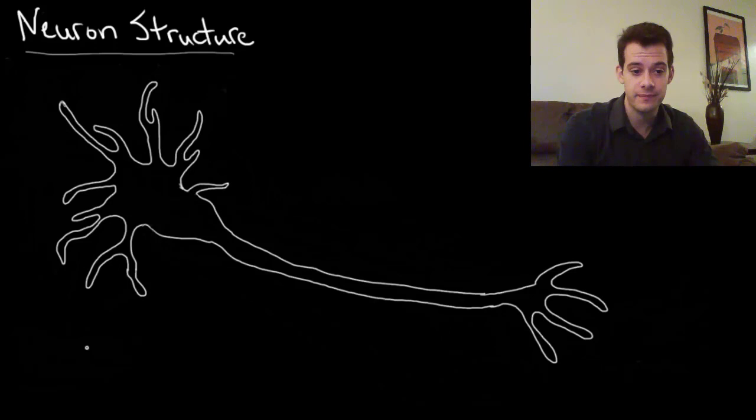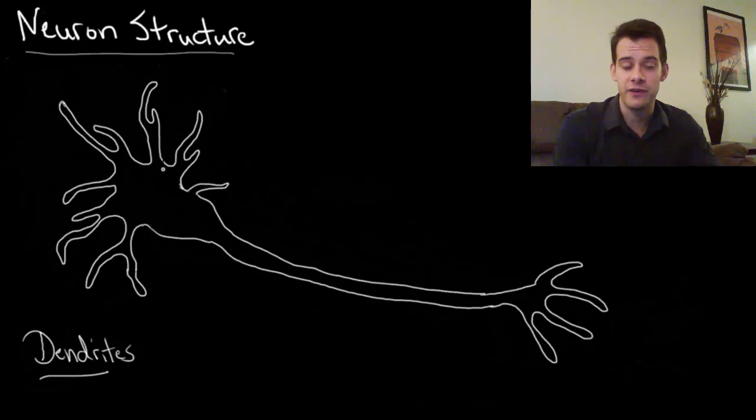So we'll start with the dendrites. This comes from the Greek word for tree, and the dendrites are these branches that reach out from the neuron. Dendrites detect messages, so they're receiving stimulation from other neurons around them.